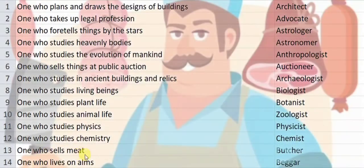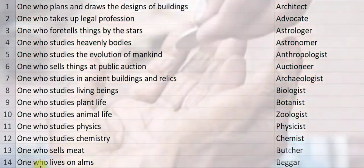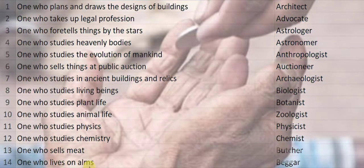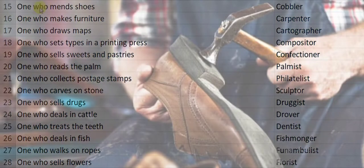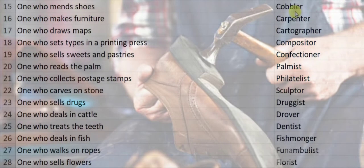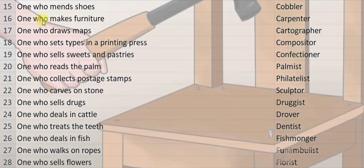One who sells meat is a butcher. One who lives on alms is a beggar. One who makes shoes is a cobbler. One who makes furniture is called a carpenter.